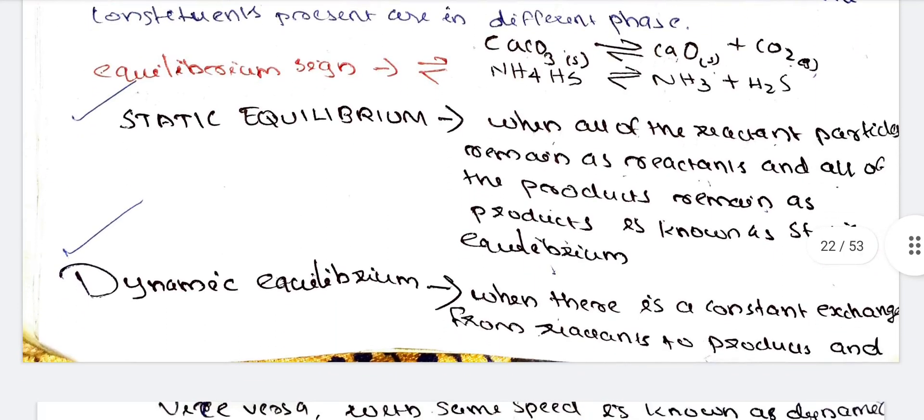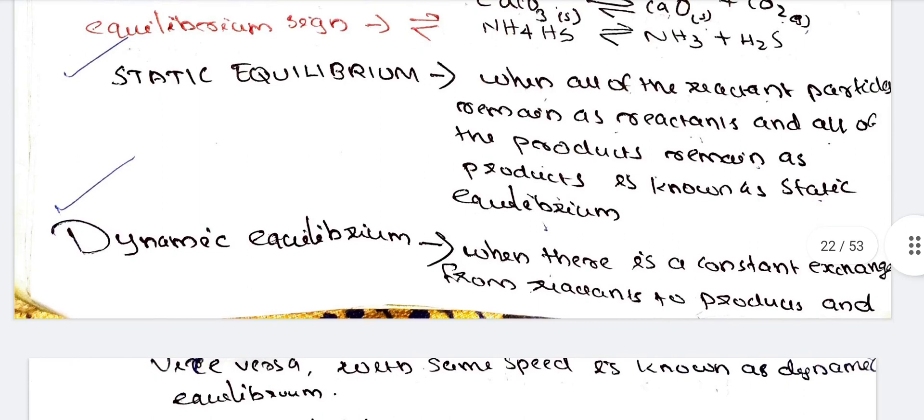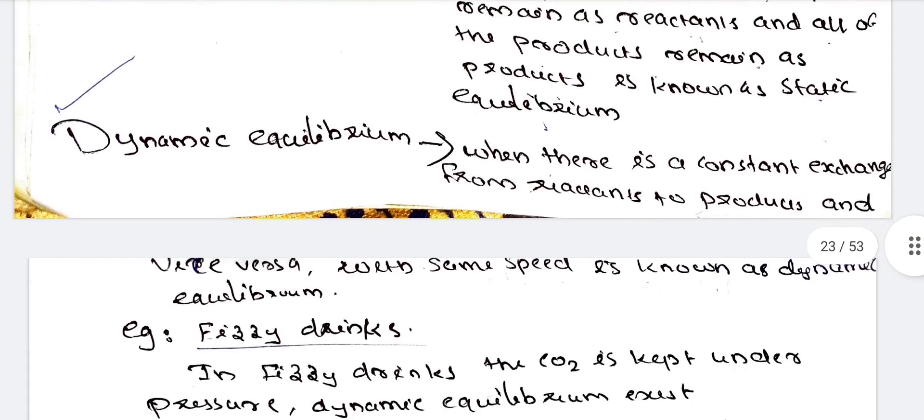Static equilibrium: one system in which all reactants is reactants and products is products is static equilibria. In the dynamic equilibria when there is a constant exchange from reactants to product and vice versa. Vice versa means that opposite. Constant exchange from reactants to product and products to reactants with the same speed is known as dynamic equilibria.